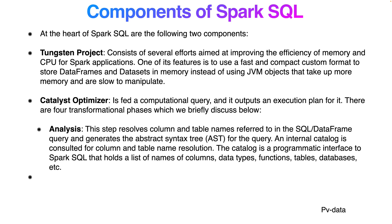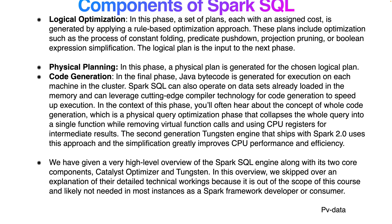The catalog is a programming interface to Spark SQL that holds a list of names, column data types, functions, tables, and databases. The second phase is Logical Planning, where a set of plans is generated by applying a rule-based optimizer approach. Each plan is assigned a cost. Optimizations include constant folding, predicate pushdown, projection pruning, and boolean expression simplification. The logical plan is then input to the next phase.